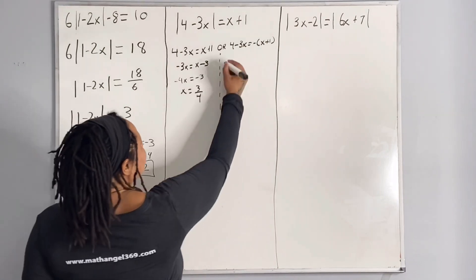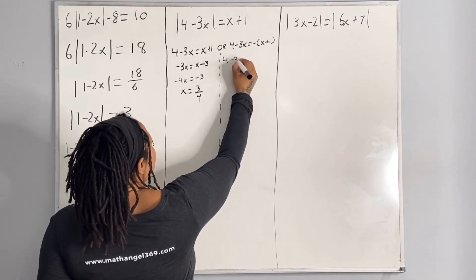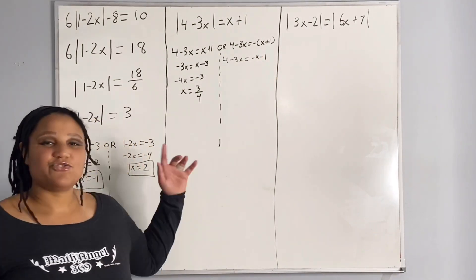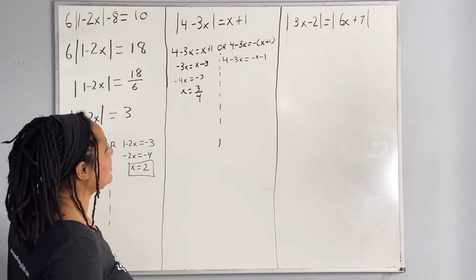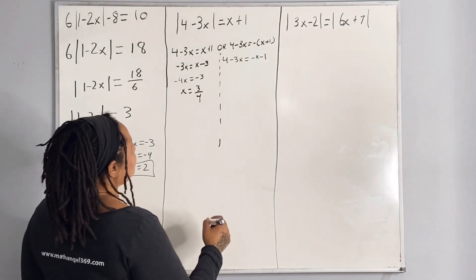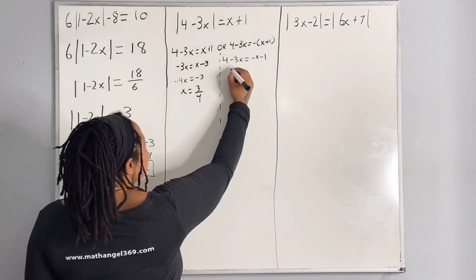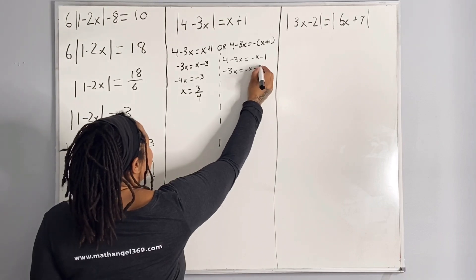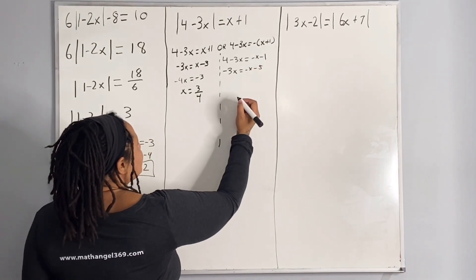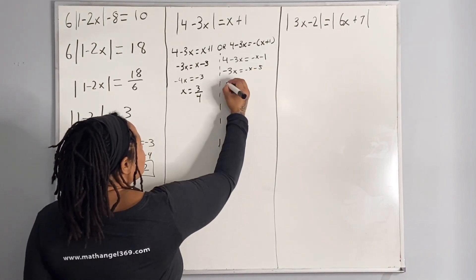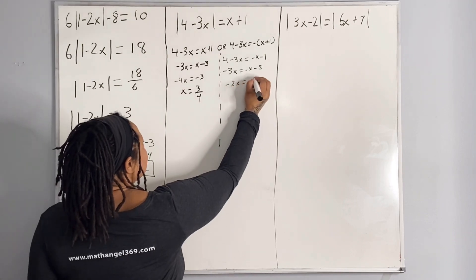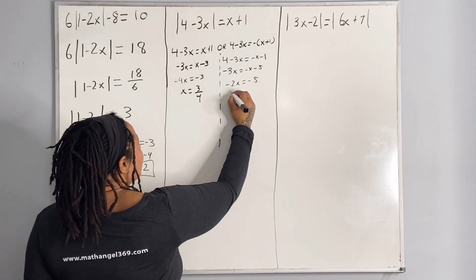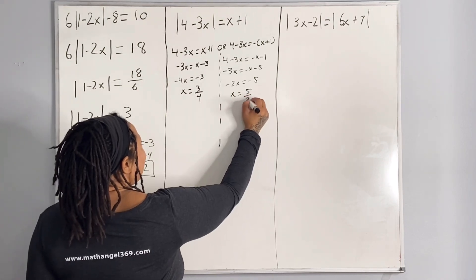Now solving the second one, we get 4 minus 3x is equal to negative x minus 1. I basically just distributed the negative sign. Subtracting 4 from both sides, we get negative 3x is equal to negative x minus 5. Adding x to both sides, we get negative 2x is equal to negative 5. Dividing both sides by 2, we get x is equal to 5 halves.